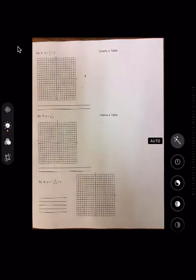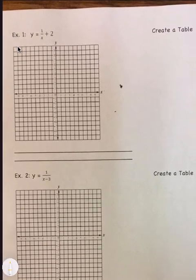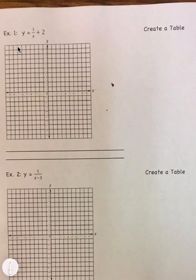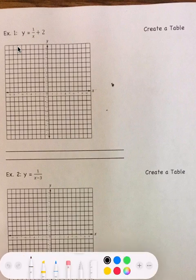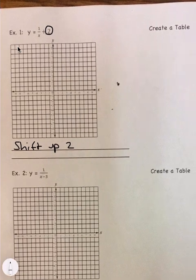Okay. So the first example you can see is y equals 1 over x plus 2. And so we want to list our transformations, and it would just be that plus 2. So that's shift up 2 units. Okay. So those are transformations. And then we want to create a table.